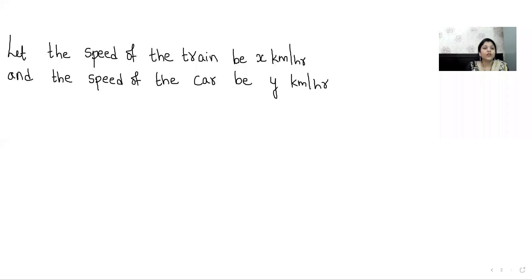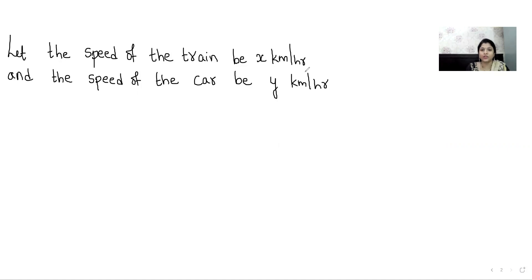Our first step will be starting with the solution. We wrote our two steps: let the speed of the train be x kilometers per hour and the speed of the car be y kilometers per hour. Whenever you assume anything as x and y, students, always write the units of whatever you have assumed. Here we have assumed speed, hence we are writing the unit of speed.